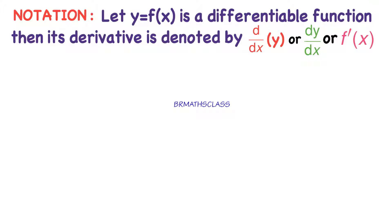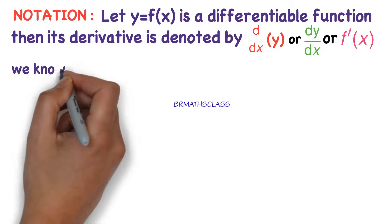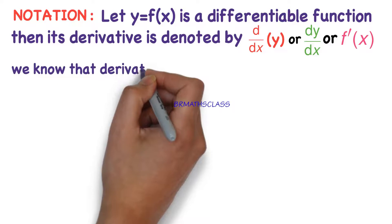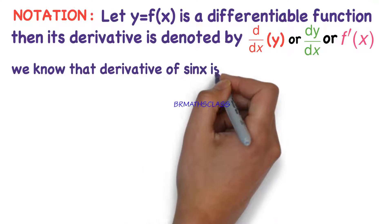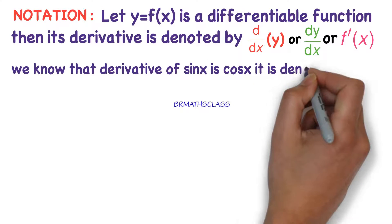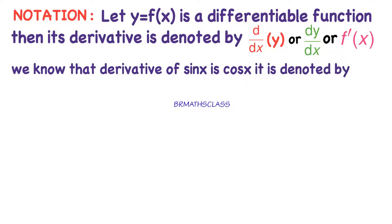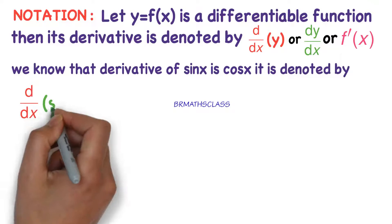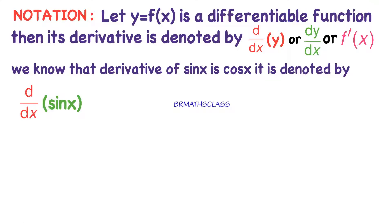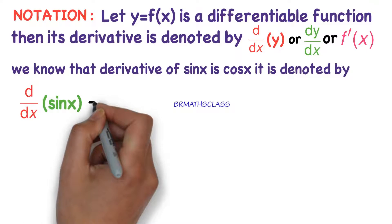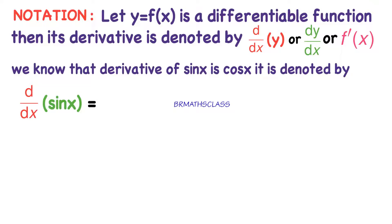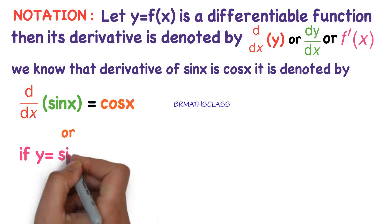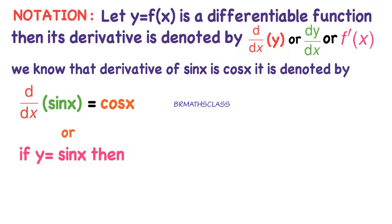This is also written as f dash of x. f dash of x is also known as derivative of f of x. We know that derivative of sin x is cos x. We represent it like this: d by dx of sin x is cos x. That means derivative of sin x with respect to x is cos x.